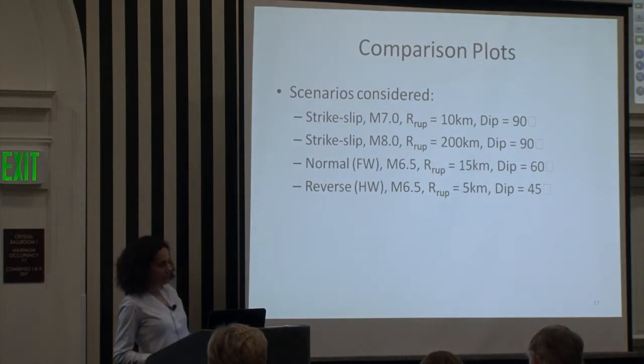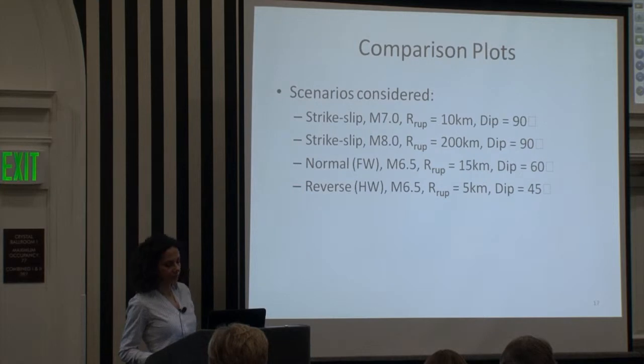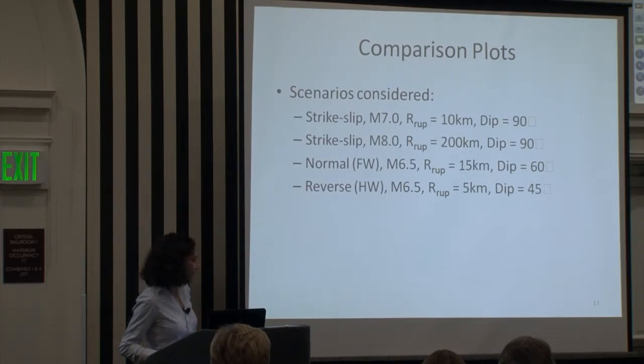So next I'm going to show comparison plots of phi, tau, and the total standard deviations for these four general scenarios: strike slip magnitude 7, rupture 10 kilometers, dip of 90 degrees; strike slip magnitude 8, rupture 200 kilometers; normal on the footwall, magnitude 6.5, rupture 15 kilometers; and reverse on the hanging wall, magnitude 6.5, rupture 5 kilometers.